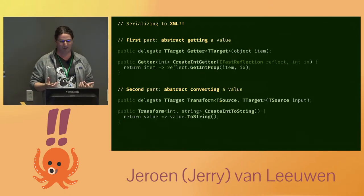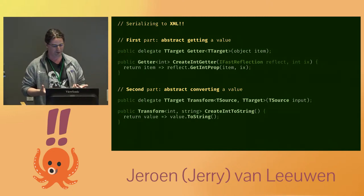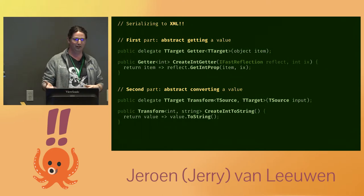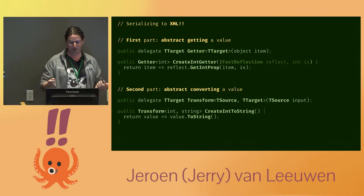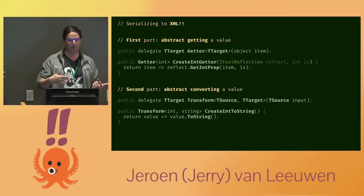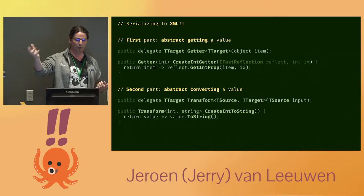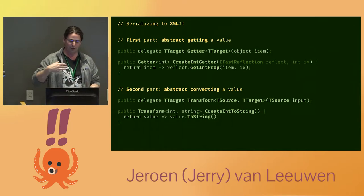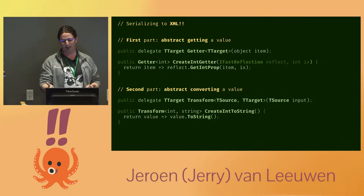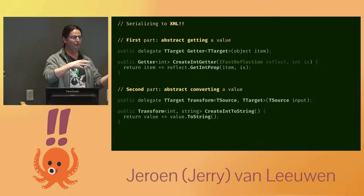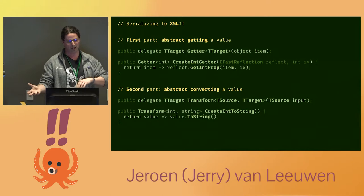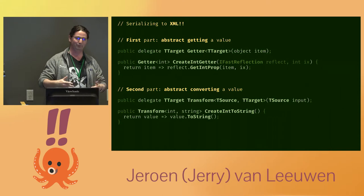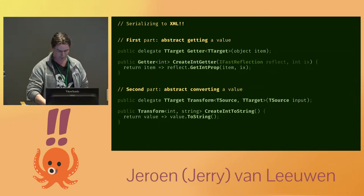Not all serializations are equal. Binary serialization is fairly straightforward, but for XML you also need to worry about converting things to strings. So I introduced a getter concept — more delegates that basically get a property from an object. You can create factory methods for that for integers, booleans, whatever. Then a second delegate concept for transforms — transforming values from one type to another — also through factory methods. There are lots of factories and lookups involved, but none of that matters if you're doing the lookups only once, so it's not a performance concern.